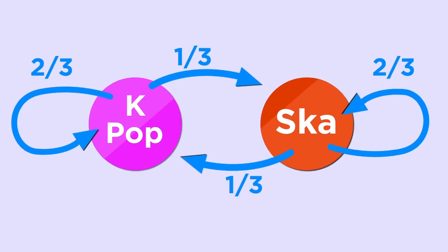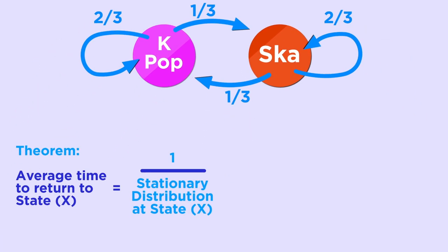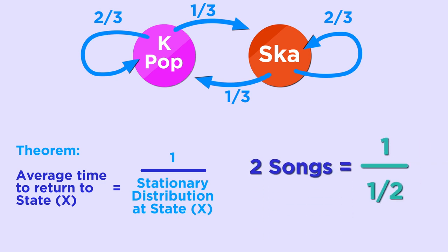Let's apply the theorem to our radio station. If we're listening to a K-pop song, how long will it take to hear another K-pop song? There's a two-thirds chance that the next song will be a K-pop song. But it's also possible that we'll listen to some ska songs before returning. Applying the theorem, we can see that, on average, it'll take 1 divided by 1 half, or 2, songs before we hear another K-pop song.